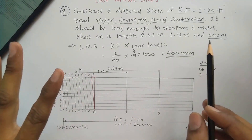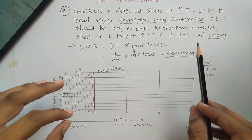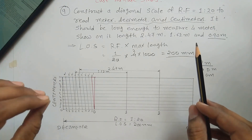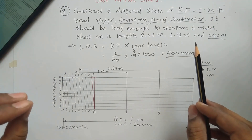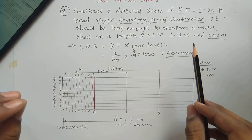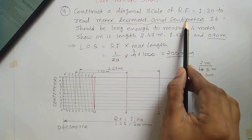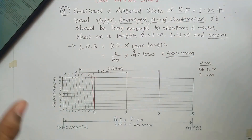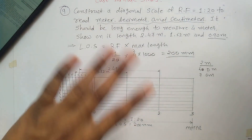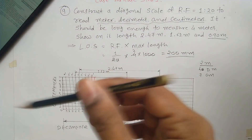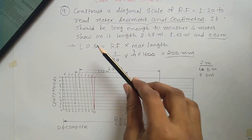In summary, a diagonal scale is used to measure three units — meter, decimeter, and centimeter — though not necessarily in that order every time. A plane scale is used only for two units. This completes the diagonal scale construction and reading.